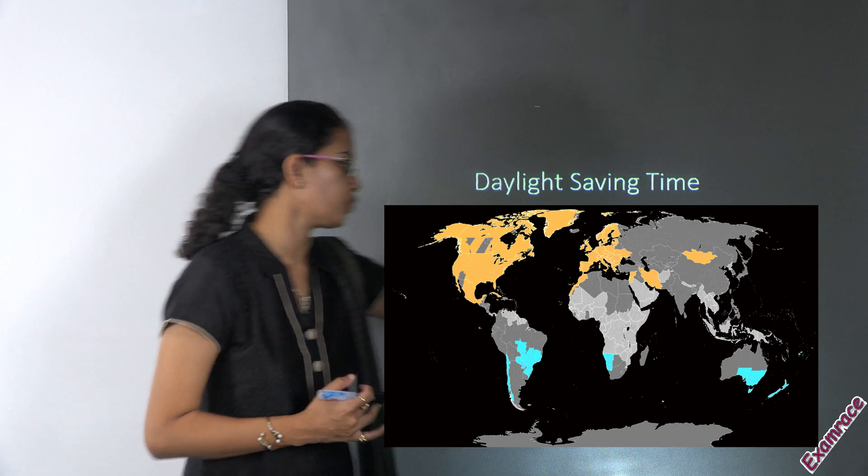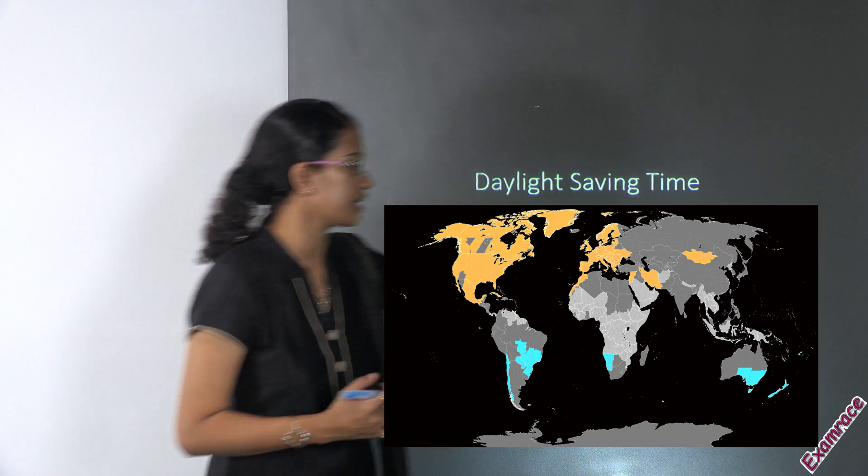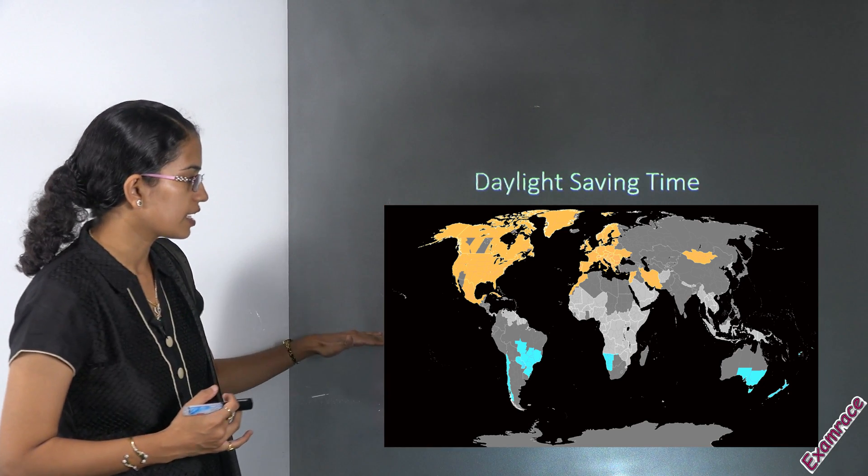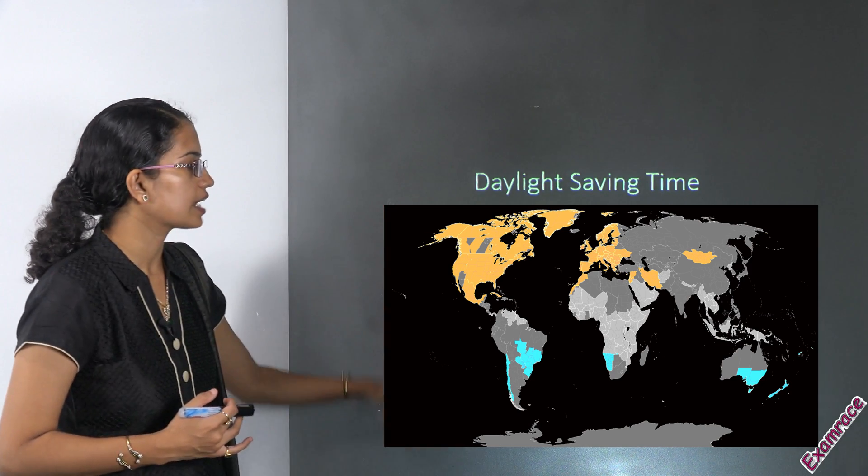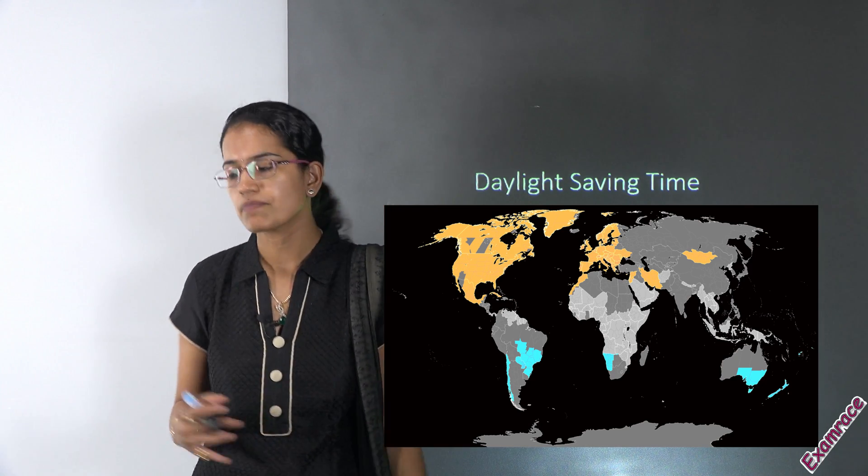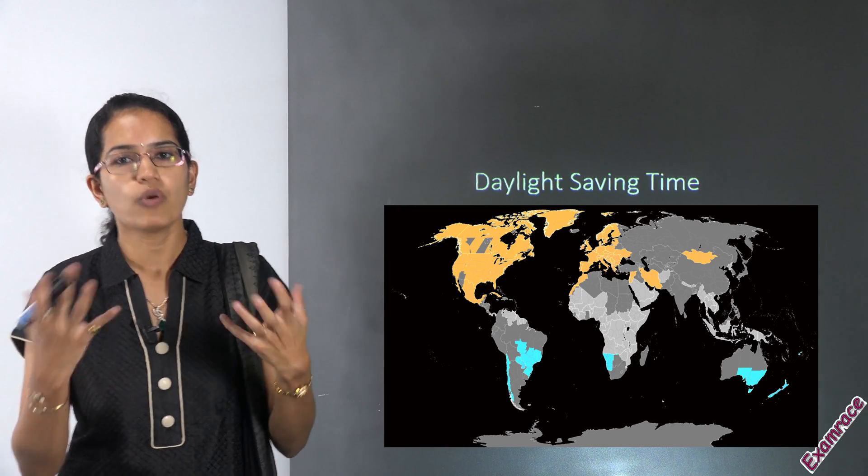As we can see the countries towards the equator usually do not think about it. The countries lying towards the polar areas basically have a daylight saving time in order to absorb more and more natural sunlight.